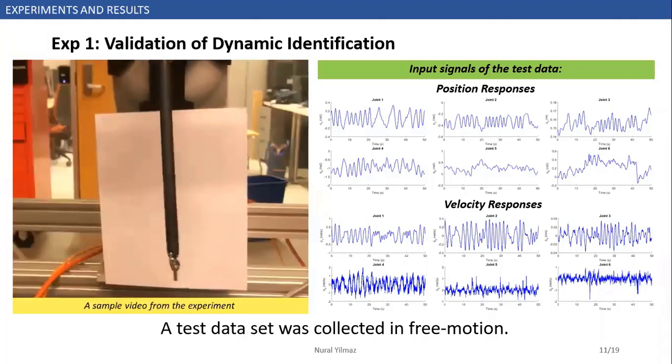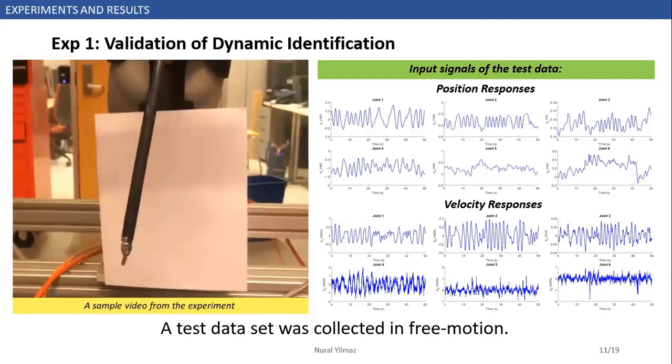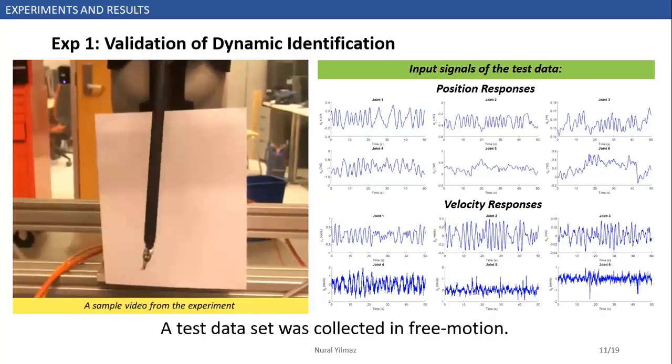In order to validate dynamic identification, we collected test data by moving the robot to different positions with different orientation and velocities. As understood from the experiment video, this part is similar to the previous part, which is training operation. In this experiment, our network models try to predict joint force torques depending on the given position and velocity responses.